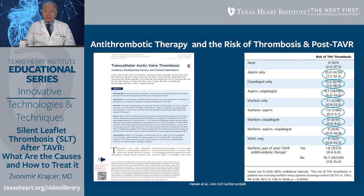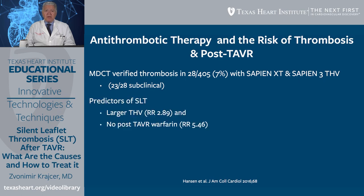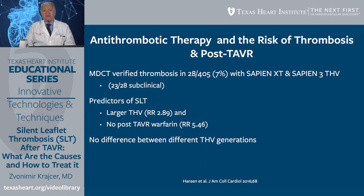In Hansen's study using 3D CT, the incidence of silent leaflet thrombosis was 7% with Sapien XT and Sapien III valves. As predictors, larger valves had a higher incidence of silent leaflet thrombosis, and no warfarin after TAVR was another important factor. There was no significant difference between different generations of transcatheter heart valves. NOACs also showed low incidence of thrombosis.